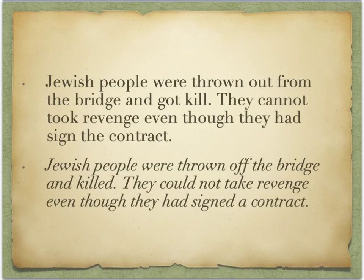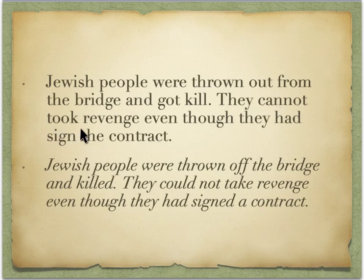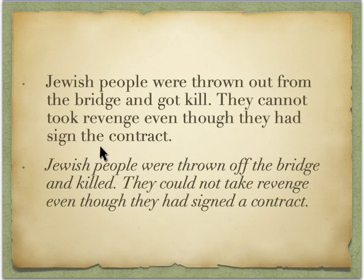Finally, one more example: 'Jewish people were thrown out from the bridge and got killed.' We have 'were thrown' — past tense — and then 'got killed' — present tense. Both of these are passive, but they should at least be in the same tense. 'They cannot took revenge' — present tense but 'took' is past. 'Even though they had signed' — this should have the past participle 'contract.' Also, 'the' is the definite article, which is incorrect here because we're talking in a general sense, not about a specific contract. Corrected: 'Jewish people were thrown off the bridge and killed. They could not take revenge, even though they had signed a contract.'